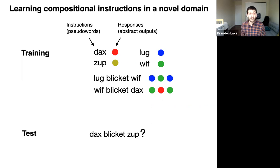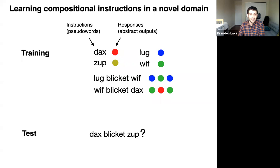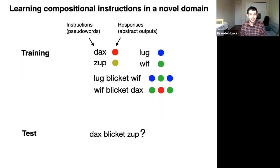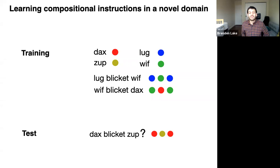I'll give you a moment to guess what the right response is for DAX-BLICKET-ZUP given the information shown. The right answer is red, yellow, red. DAX is red and ZUP is yellow, and BLICKET is a function. When you DAX-BLICKET-ZUP, it really means DAX-ZUP-DAX, or red, yellow, red — BLICKET means the DAX surrounds the ZUP, or the red surrounds the yellow. That's what BLICKET means in this particular case.